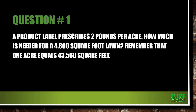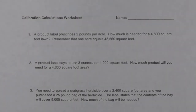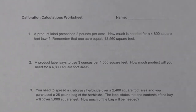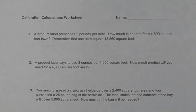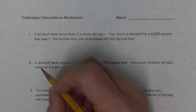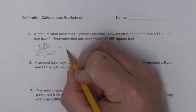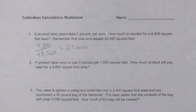Let's work this problem out. I like working in 1,000 square foot blocks. A product label prescribes 2 pounds per acre; how much is needed for a 4,800 square foot lawn? The first thing I'm going to do is take 4,800 and divide it by 43,560, which gives me 0.1 acres — a tenth of an acre.